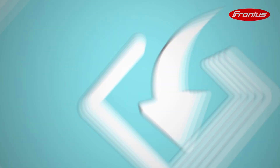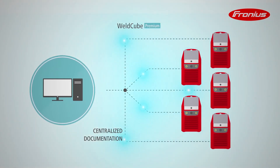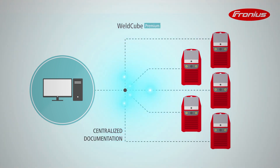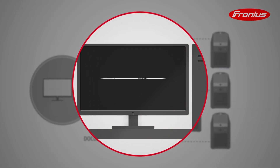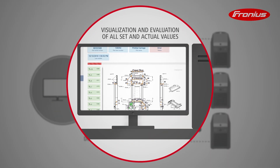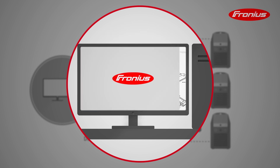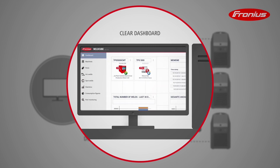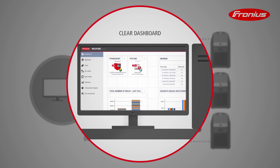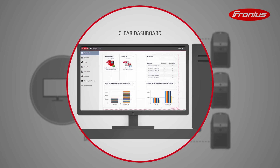With WeldCube Premium, your welding data is centrally documented and displayed in a browser-based visualization. This server-based software solution can be connected to up to 50 Fronius welding systems. This allows for cross-system and workpiece-related documentation, visualization, and analysis of your set and actual values. The customizable dashboard means that you always have an overview of your connected machines and the statistics for your daily use.